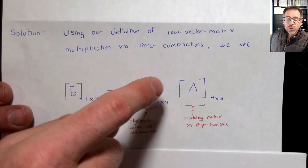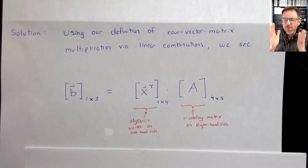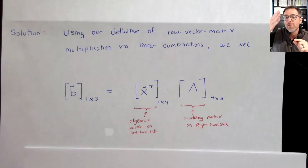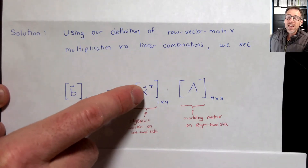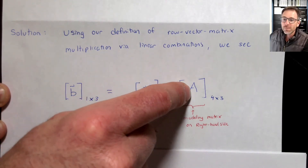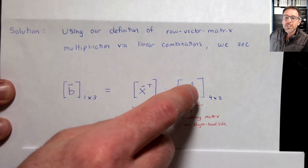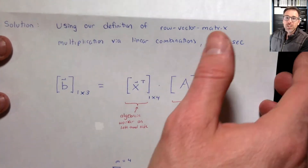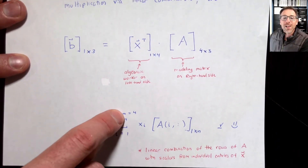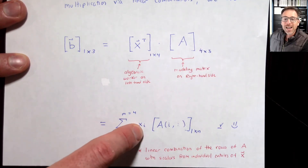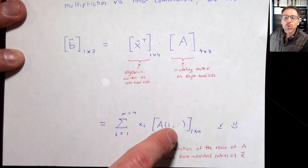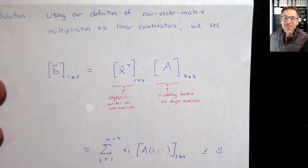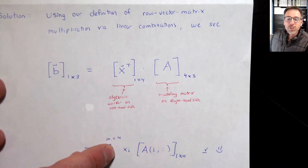Here we go — we're taking x-transpose times A. For matrix-column vector multiplication, we take a linear combination of the columns with scalars from x. Here we're on the other side, so we take linear combinations of the rows with individual coefficients from x. That's x1 times row 1 plus x2 times row 2 plus ... plus xM times row M. In summation notation, that's the sum from i=1 to M of x_i times the i-th row of A — a linear combination of the rows of A with scalars from x.